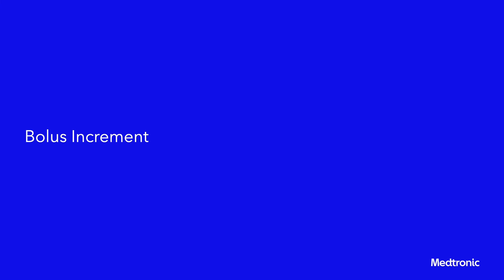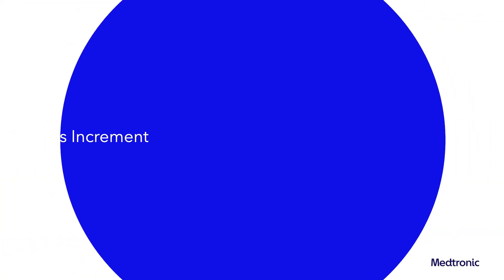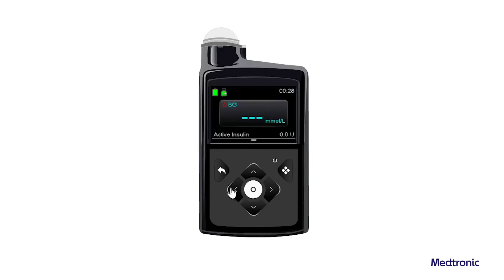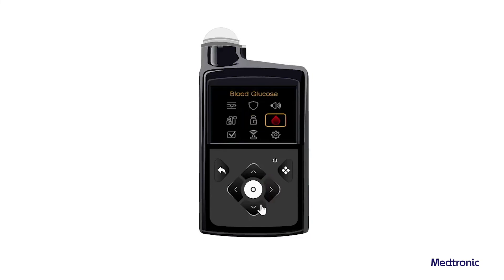The bolus increment applies in the bolus wizard, manual bolus, and preset bolus screens. Depending on the typical bolus amount, the increments can be set to 0.1 units, 0.05 units, or 0.025 units. To set the bolus increment, from the home screen press select and then select Settings.